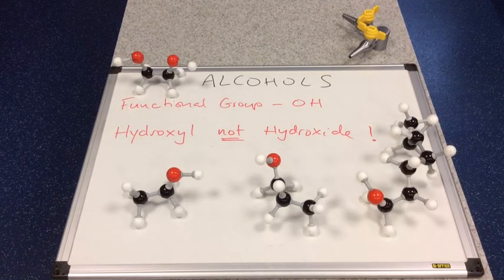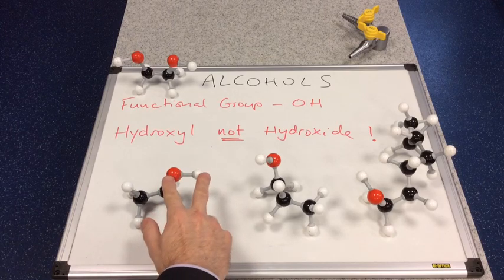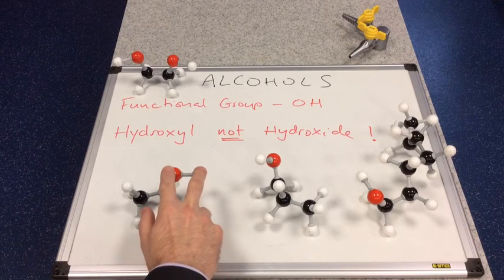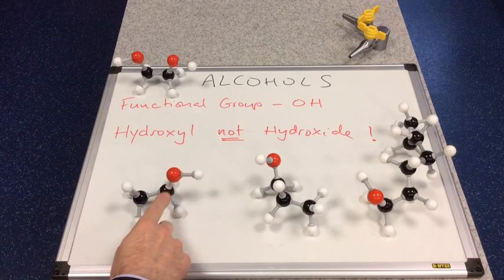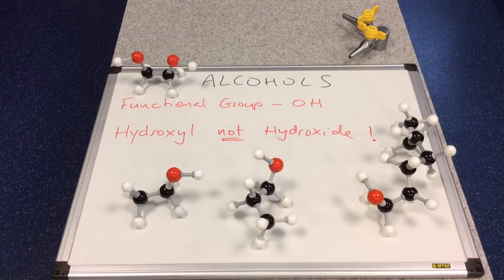We'll start with the functional group of alcohols. As written on the board, the functional group is the OH group. In each of these molecules we have an OH group — that's the red and the white — directly bonded to a carbon atom. So that's going on in all of these four molecules, and so these all belong to the alcohols group of molecules.